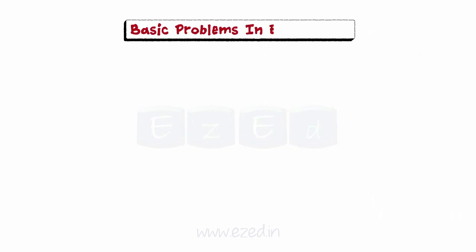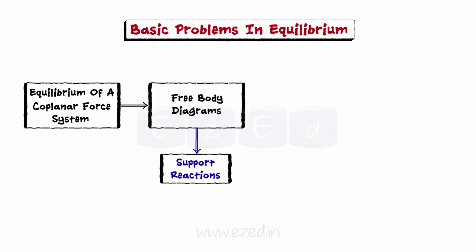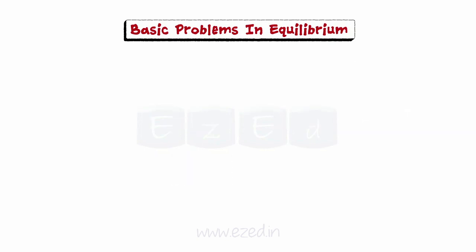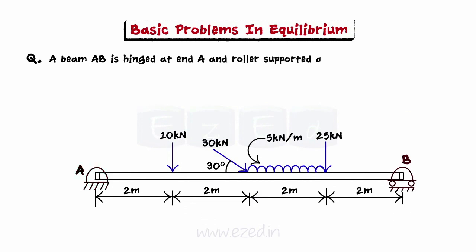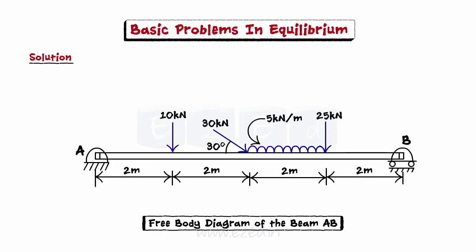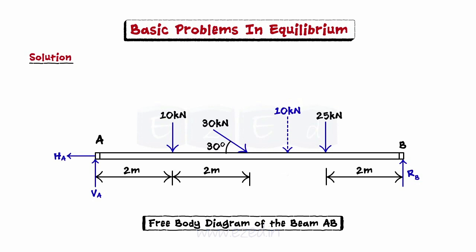The following problems will be helpful to understand the concept behind equilibrium of a coplanar force system. The way we draw the free body diagrams, show the reactions offered by the supports, and finally apply conditions of equilibrium to the system to calculate the unknowns. Consider the following problem: a beam AB is hinged at end A and roller supported at end B, acted upon by loads as shown. Find the support reactions. We will first draw the FBD of beam AB. Reactions at the supports are accordingly assumed. Hinge at A gives a reaction having components HA and VA. Roller at B gives vertical reaction RB. The uniformly distributed load has been converted into a point load of 10 kN acting at the center of the UDL. The 30 kN force has been resolved into components.